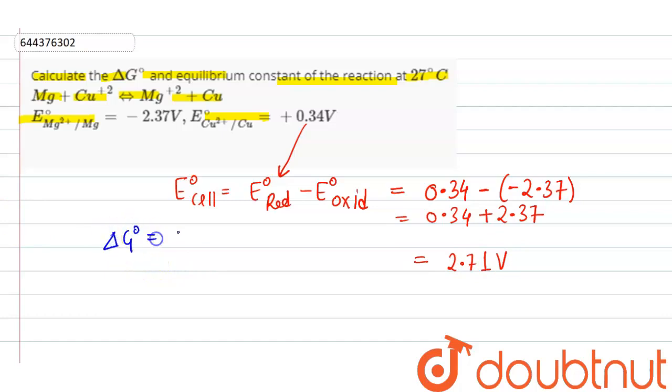Now the formula of ΔG⁰ equals -nFE⁰ cell, where n is the number of electrons transferred. In this question, n equals 2, F is 96,500, and the value of E⁰ cell is 2.71.